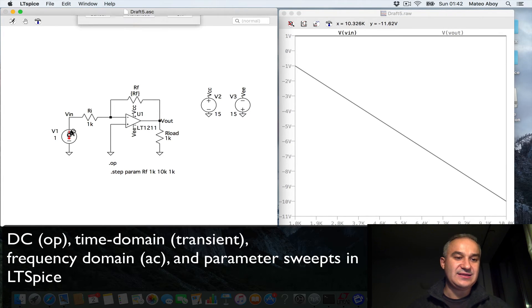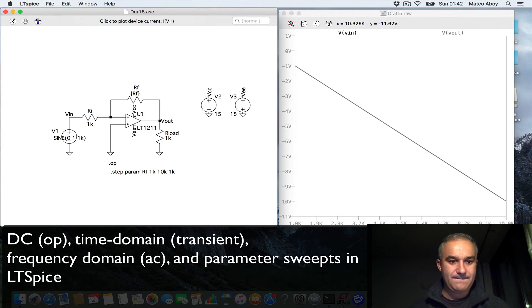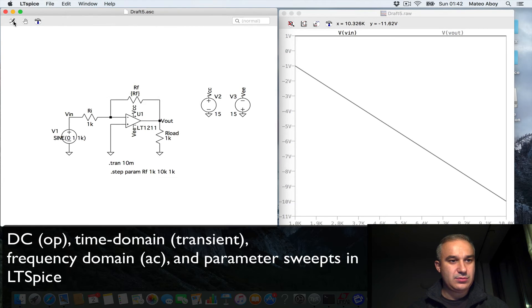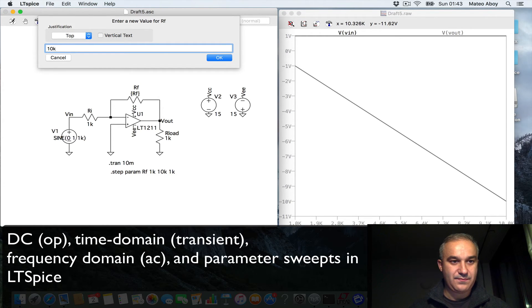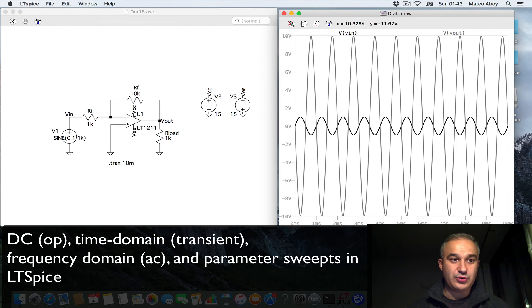So let me put a sinusoidal input, zero offset, amplitude of 1, frequency of 1K, and let me actually change the operating point to a transient analysis. Transient analysis is a time domain analysis, looking at the signals in the time domain. We need to look at this for 10 milliseconds, so 10 cycles, and first let me not have the parameter. I'm just going to do 10K, so we should see a gain of 10.